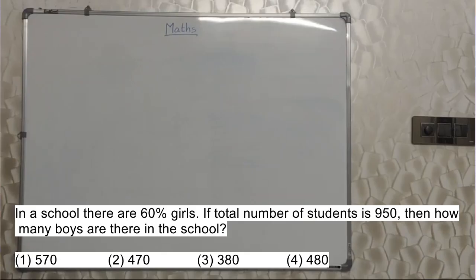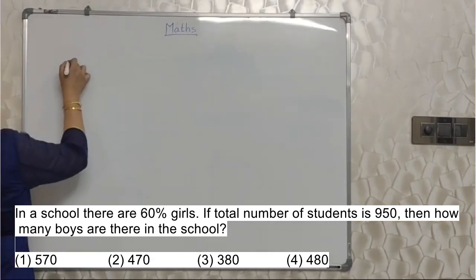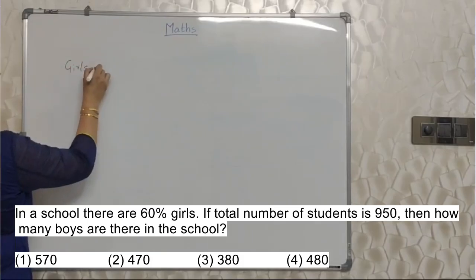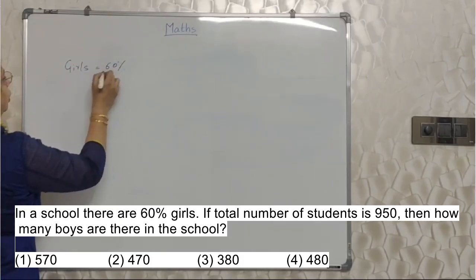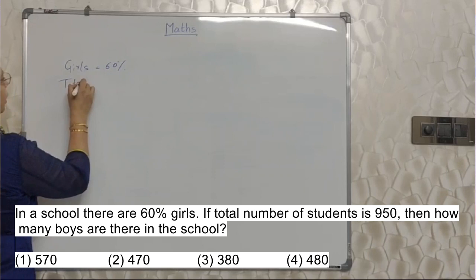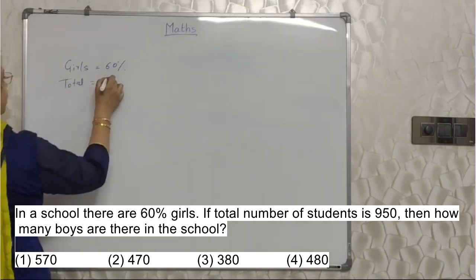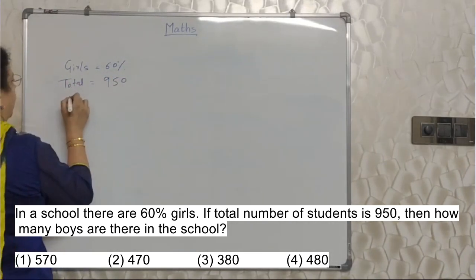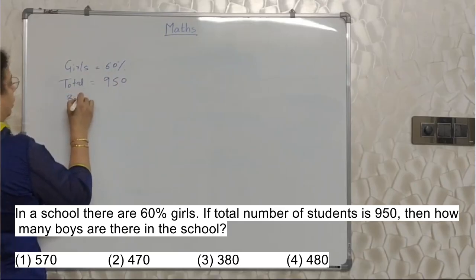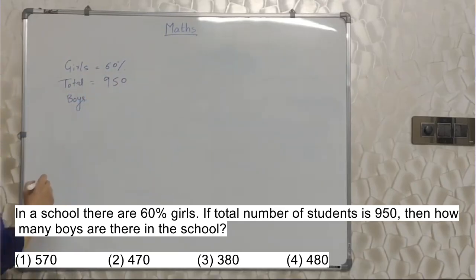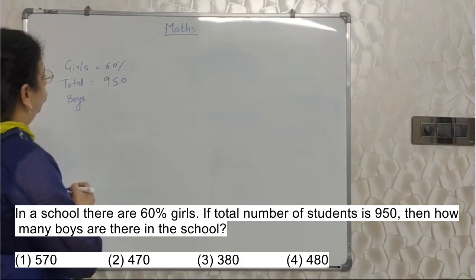Next sum will appear on your screen. In a school, there are 60% girls. If total number of students is 950, then how many boys are there in the school? 60% are girls. Total students how many? 950. So they are asking how many boys are there?